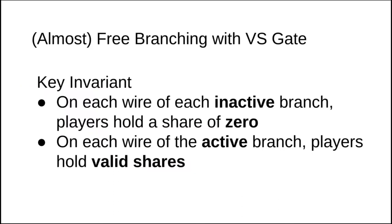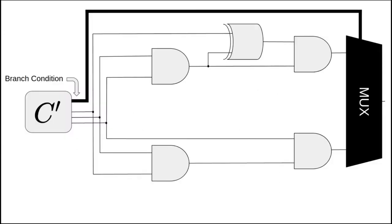In order to show how VersusGate can efficiently evaluate conditionals, we first state our invariant. On each wire of each inactive branch, players will hold a share of 0. On the other hand, on each wire of the active branch, players hold valid shares. We now consider a specific circuit where one branch consists of two AND-gates and a single XOR gate, while the other branch consists of two AND-gates.